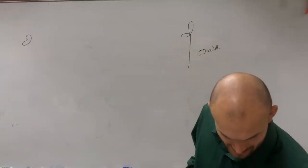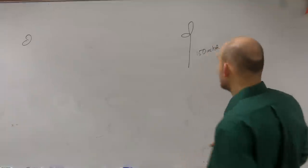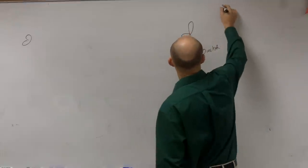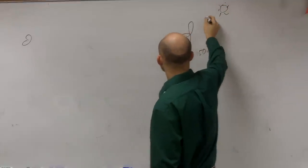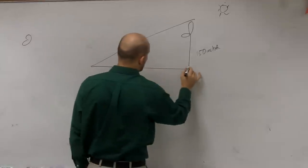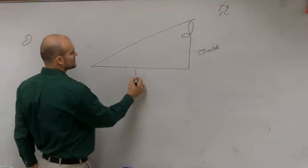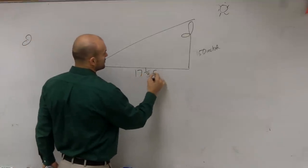So then it says the backboard casts a shadow 17 and one third feet long. So you got a nice sun right here and it's going to cast a shadow. Now the length of the shadow, not the length of the shadow ray, but the length of the shadow is 17 and a third feet.